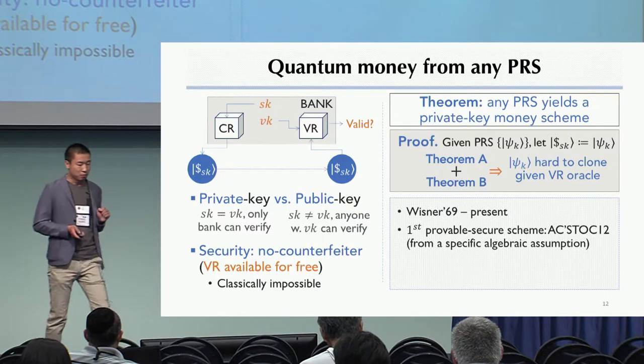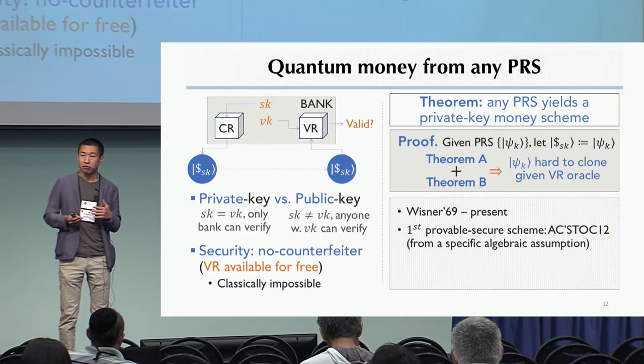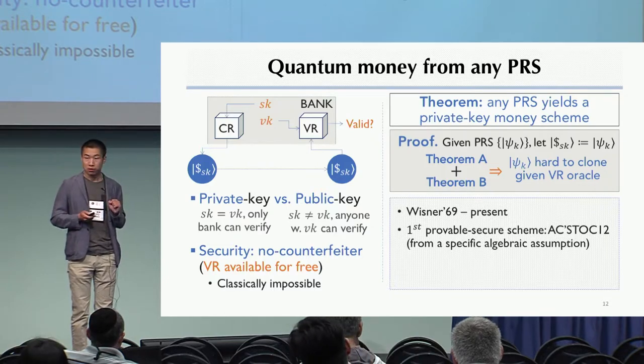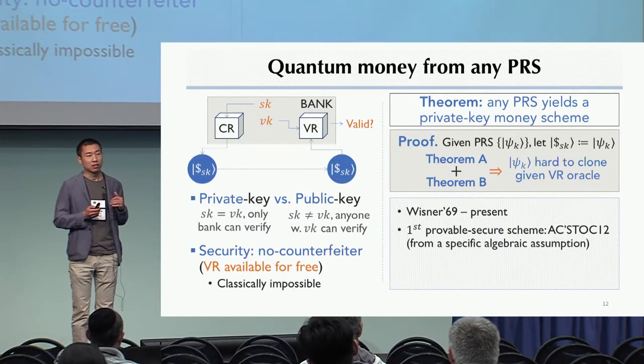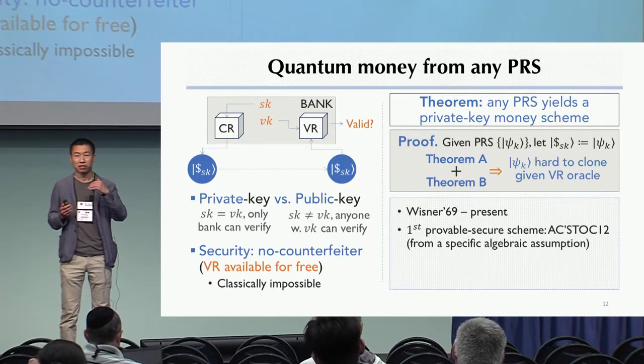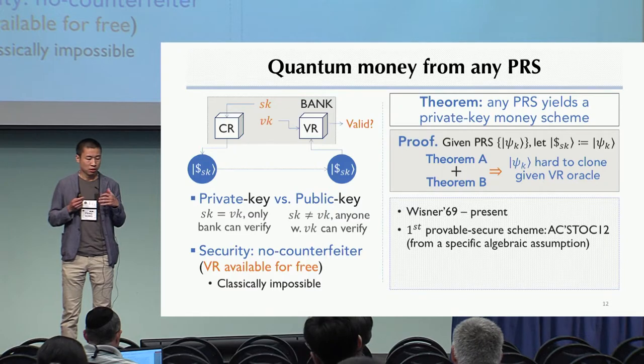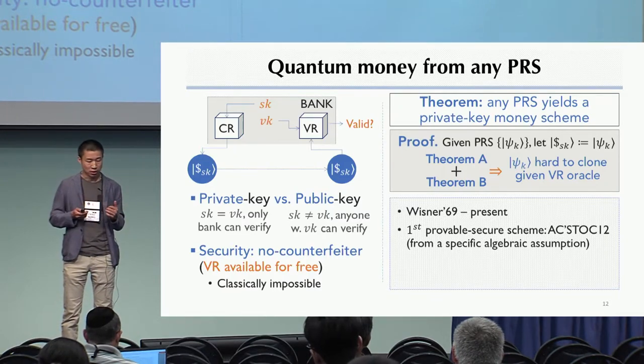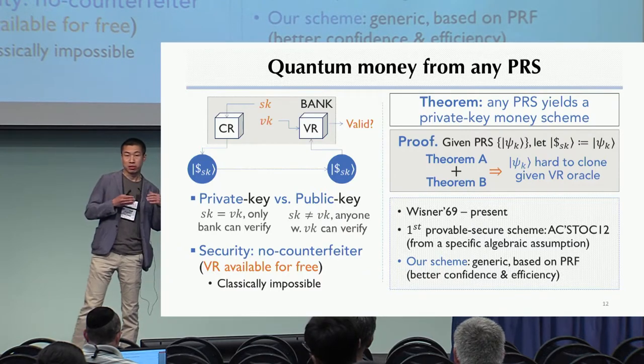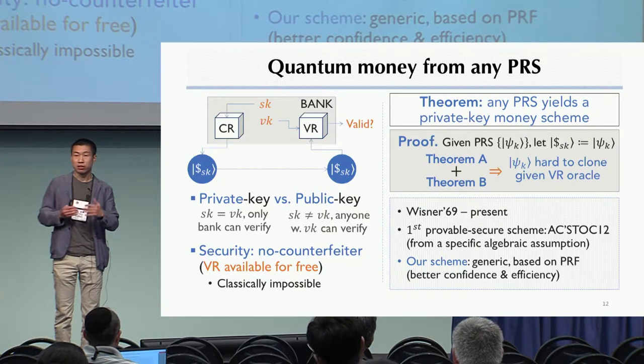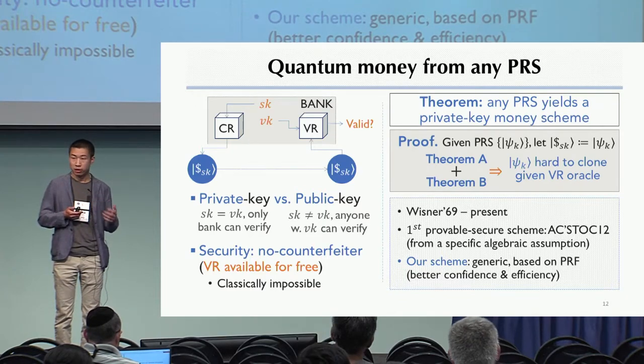And I want to point out that the idea of creating quantum money by means of quantum information, that was proposed back in the 60s, and was considered the birth of quantum cryptography. But getting a secure one has been really an achievement, and there's a long history of breaks and fixes. It's not until 2012 that Aaronson and Christiano proposed the first proven secure private key quantum money based on a specific algebraic assumption. And in comparison, our scheme is generic and can be based on any pseudorandom state. And we'll see in a second that can be based on any quantum secure pseudorandom function. So this will be more versatile and could offer better efficiency and security.